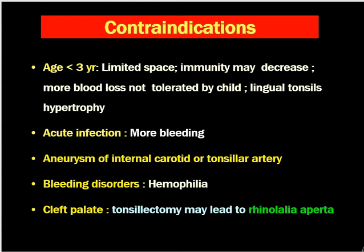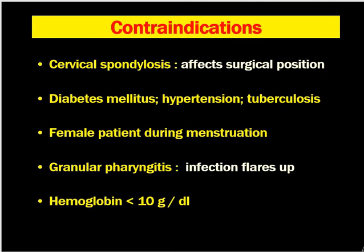Aneurysm of the internal carotid artery or tonsillar artery is the absolute contraindication for tonsillectomy, as traumatizing these vessels may cause heavy bleeding. Bleeding disorders like haemophilia are also contraindications as the patient might bleed after tonsillectomy. When a child has a cleft palate, it is wiser not to perform tonsillectomy as it might lead to velopharyngeal insufficiency. Other relative contraindications include cervical spondylosis affecting the surgical position, diabetes mellitus, hypertension, tuberculosis, female patients during menstrual cycle with vicarious menstruation, granular pharyngitis, and haemoglobin less than 10 g/dL.